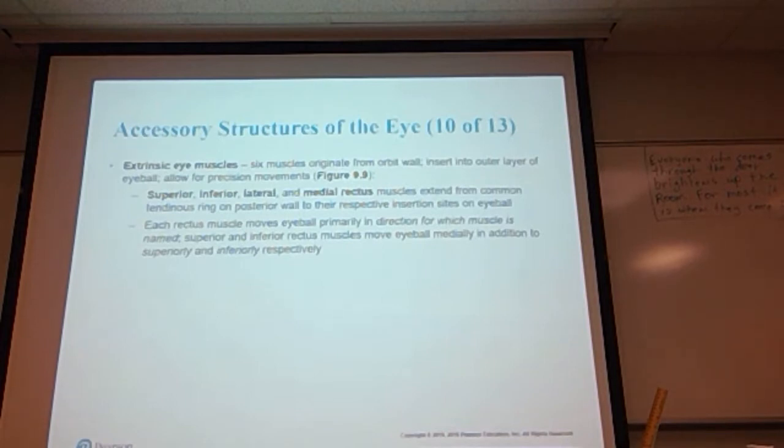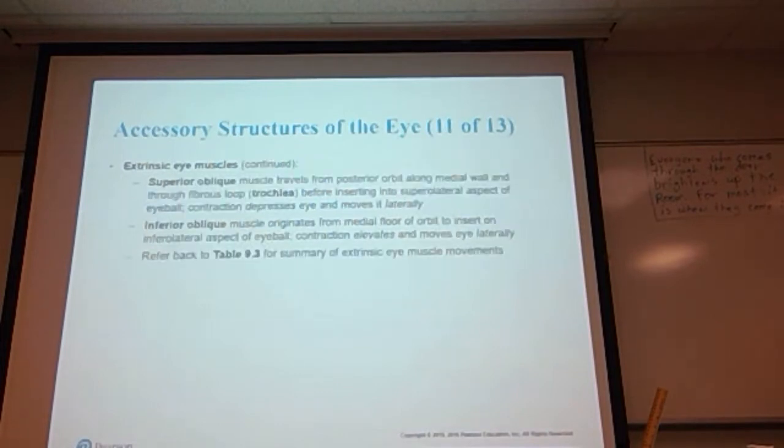Each of these muscles moves the eyeball primarily in one direction for which the muscle is named. Superior and inferior rectus muscles move the eyeball medially in addition to superiorly and inferiorly respectively. In other words, the superior moves the eye up and to the middle, the inferior moves the eyeball down and to the middle. The superior oblique muscle travels from the posterior orbit along the medial wall and through a fibrous loop called the trochlea before inserting into the superior lateral aspect of the eyeball. The contraction of this muscle depresses the eye and moves it laterally.